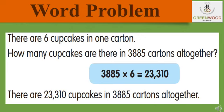Next is a word problem. There are 6 cupcakes in 1 carton. How many cupcakes are there in 3,885 cartons altogether? What will we do — addition or multiplication? Yes, multiplication, because that will be an easy method. When we multiply 3,885 into 6, we get the answer 23,310. So there are 23,310 cupcakes in 3,885 cartons altogether.